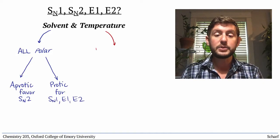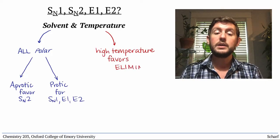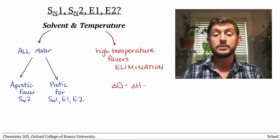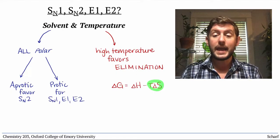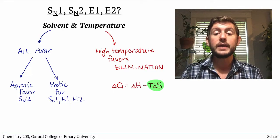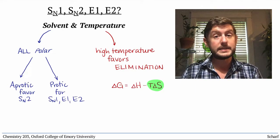And higher temperatures tend to favor elimination over substitution, because the equation delta G equals delta H minus T delta S tells us that higher temperatures make entropy a more important player. And elimination reactions are generally more favorable than substitution reactions from an entropy standpoint.